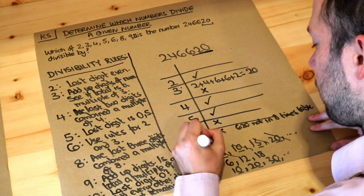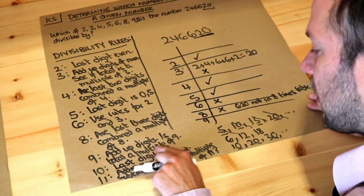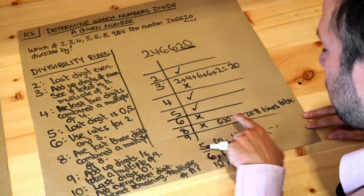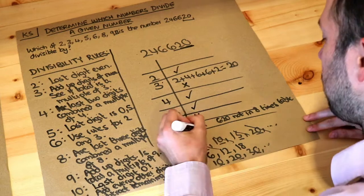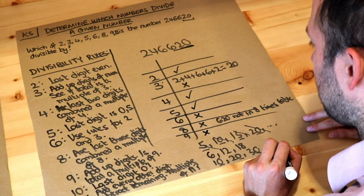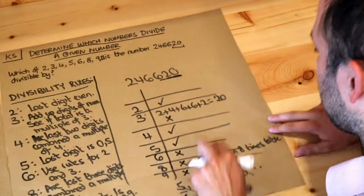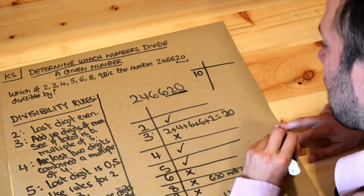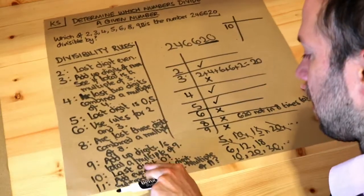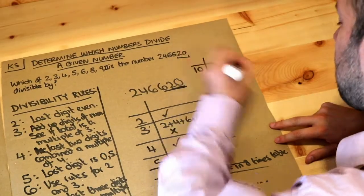For 9 we said you add up the digits and is the total multiple of 9. Now we saw earlier the digits added up to 20. 20 is not in the 9 times table so therefore it's not a multiple of 9. Now I'm running out of space so let me give myself more space up here. Is it a multiple of 10? Well the last digit is a 0. Last digit is 0. So yes it is a multiple of 10.